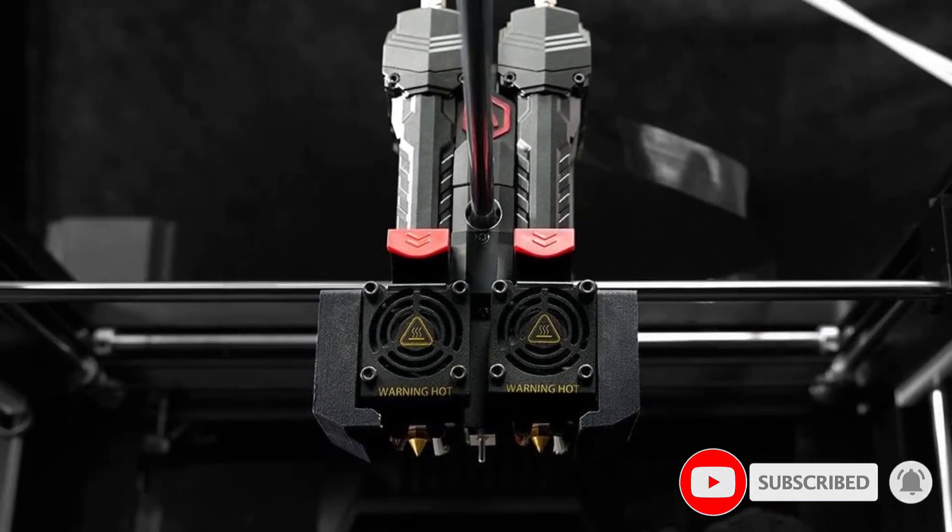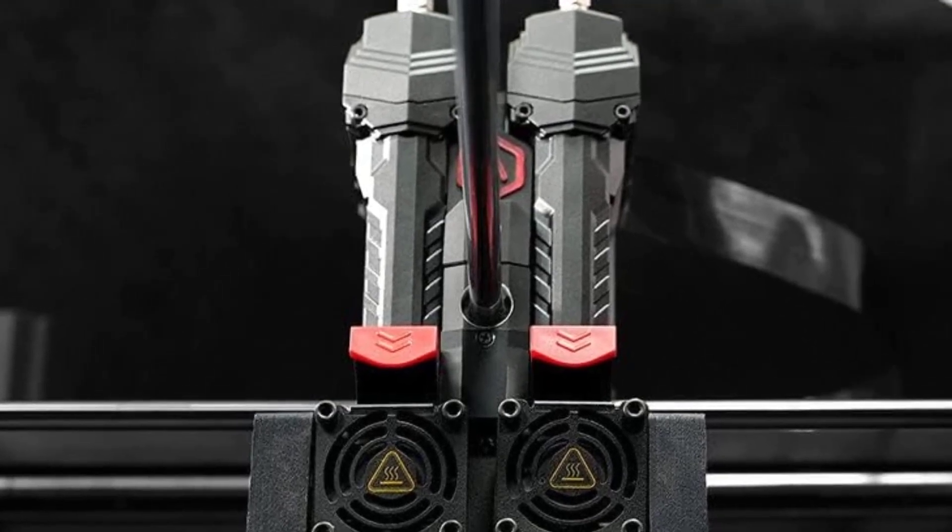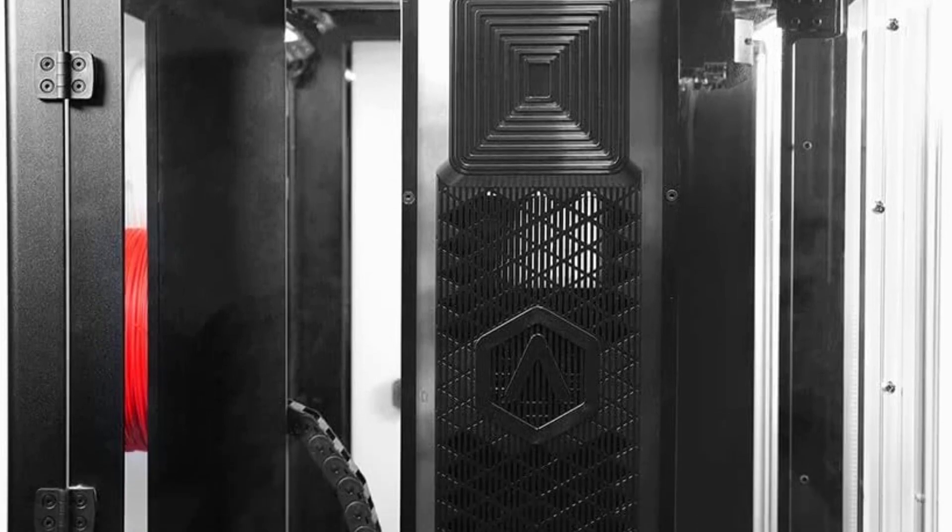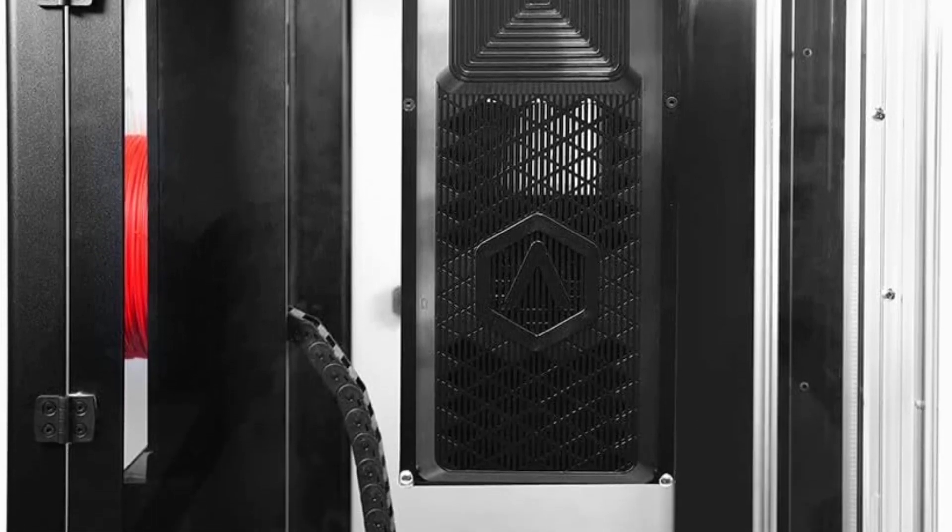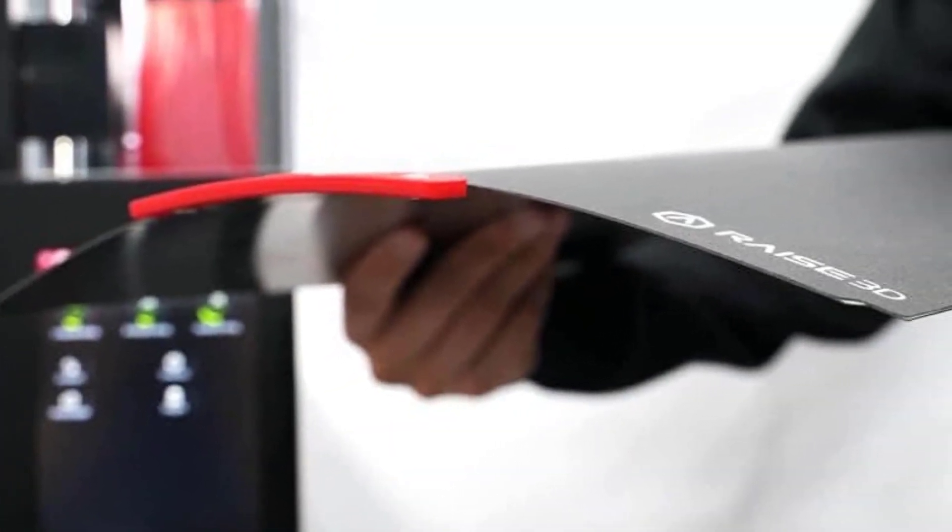This allows you to print with two different colors or materials at the same time. The Pro 3 also features a mesh leveling system that ensures your prints are always of the highest quality. Additionally, the machine comes with Wi-Fi, LAN, USB port, and live camera connectivity, so you can easily monitor your prints from anywhere.